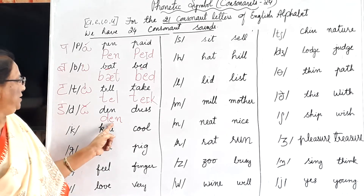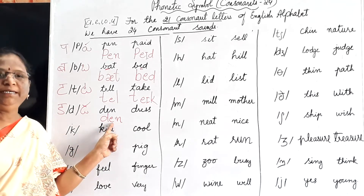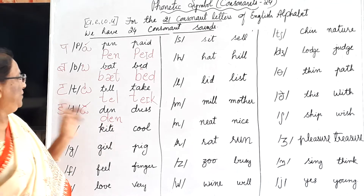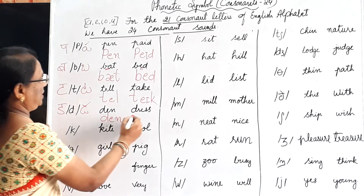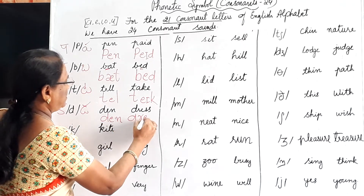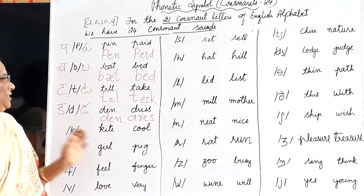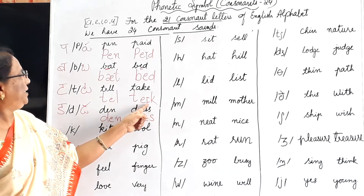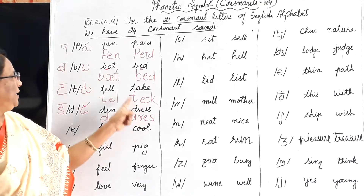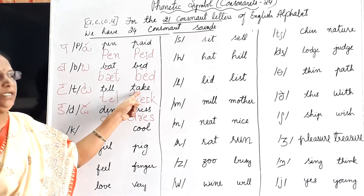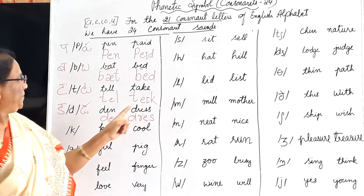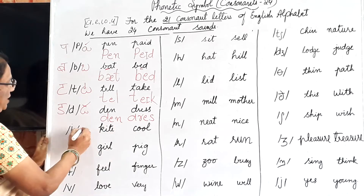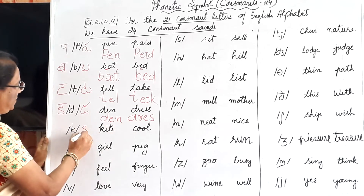Next, D stands for the /d/ sound. Dress — this vowel here is a diphthong sound, not a simple /e/. It is /take/ — see, the vowel changes the sound. Dress. Now K stands for the /k/ sound.